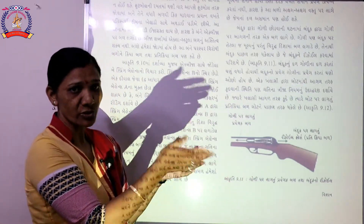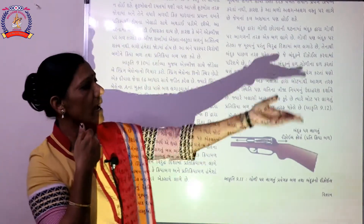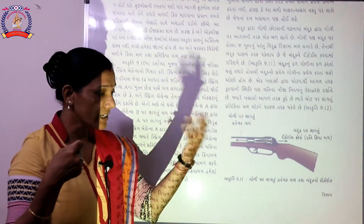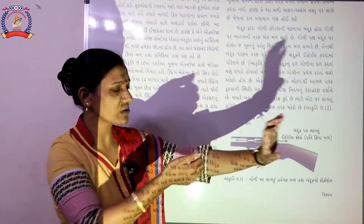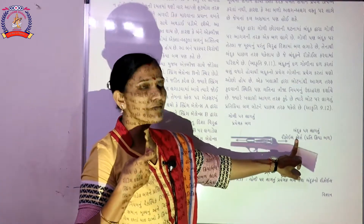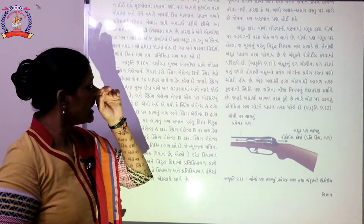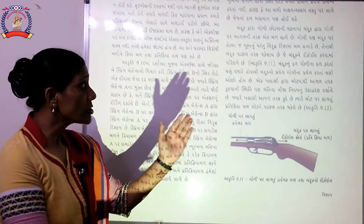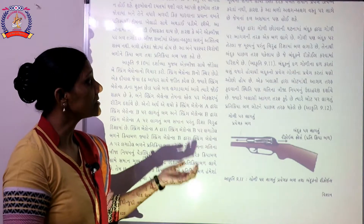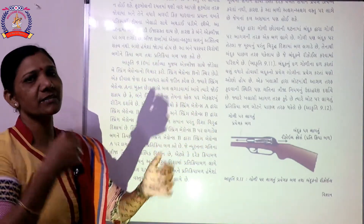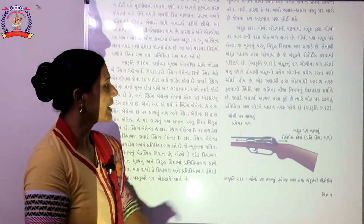ગોળી છોડવામાં આવે છે — બંદૂક ગોળી છોડે ત્યારે ગોળી ને ખેંચો, ક્રિયા બળ અને પ્રતિ ક્રિયા બળ — ગોળી ને આ દિશામાં છોડી, તો તમે વિરુદ્ધ દિશામાં ધક્કો અનુભવો. આ બંદૂક ને રિકોઈલ કરાવે.